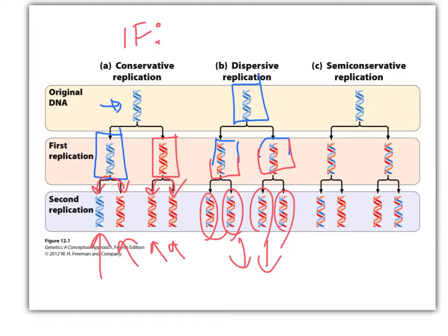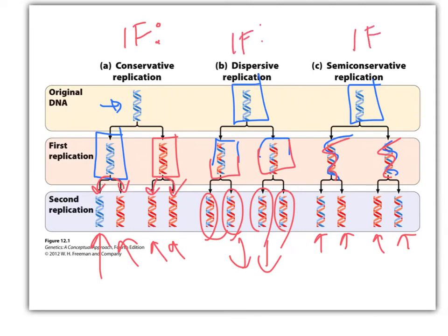In semi-conservative, you have one template strand and one new strand in each resulting molecule — one old, one new; one old, one new. Then if you did another round, you'd get new-new pairings and old-new pairings, but you get the idea. That's what happens if each of those models were actually correct.